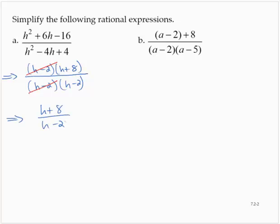Exercise b. We have a minus 2 plus 8 over a minus 2 times a minus 5. It might be tempting to remove those a minus 2s, but in the numerator, the a minus 2 is a term, not a factor. It's being added to something. It's not being multiplied.